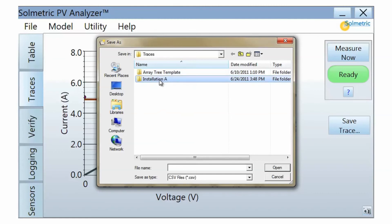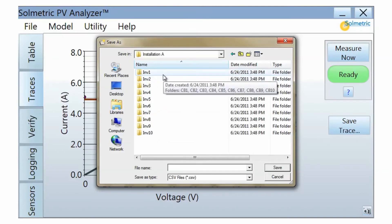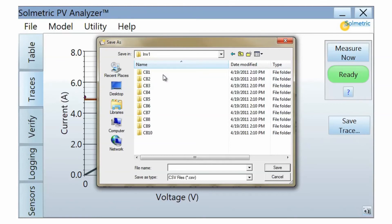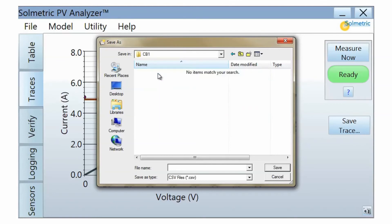The folders immediately below the site folder represent your inverters. In each inverter folder is a folder for each combiner box, and this is where you save your PV string measurements.